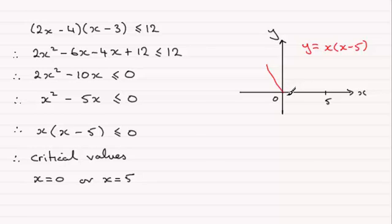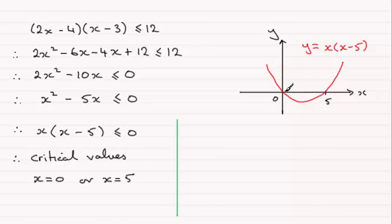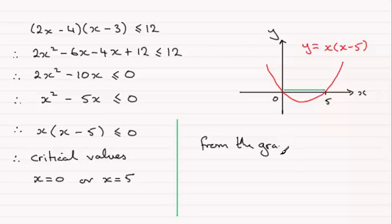We're looking for the values that give us y less than or equal to 0 — those are the values below the x-axis, in other words between 0 and 5. Because we've got the equals sign in this inequality, from the graph we can see that x must lie between 0 and 5, and because of the equality it can actually equal those extreme values.